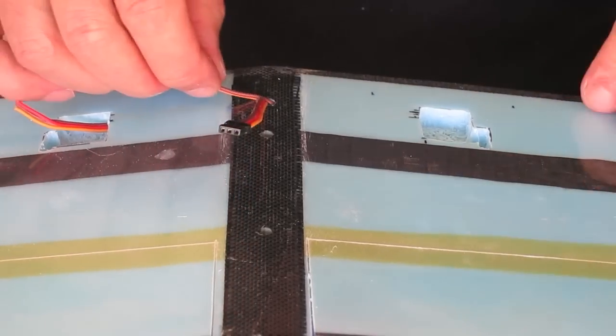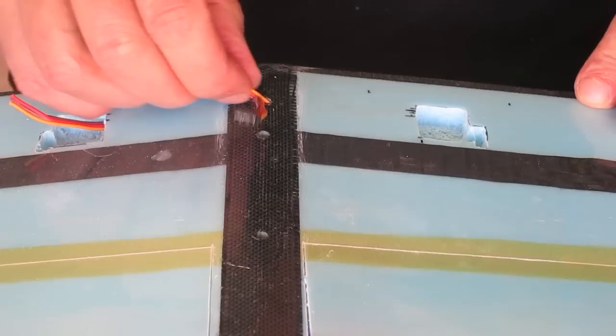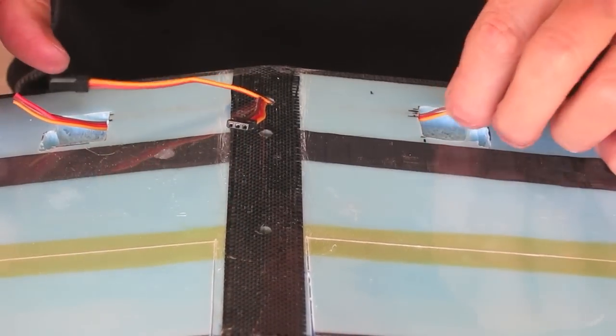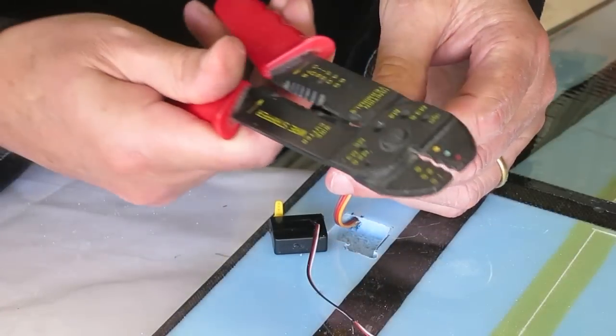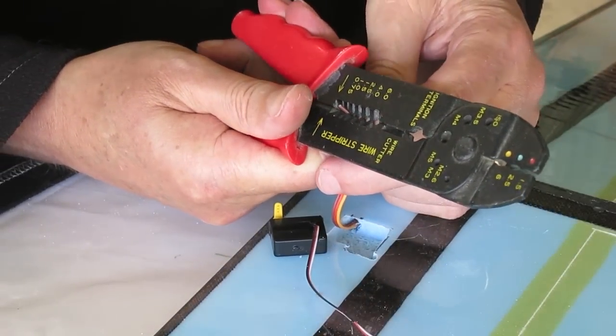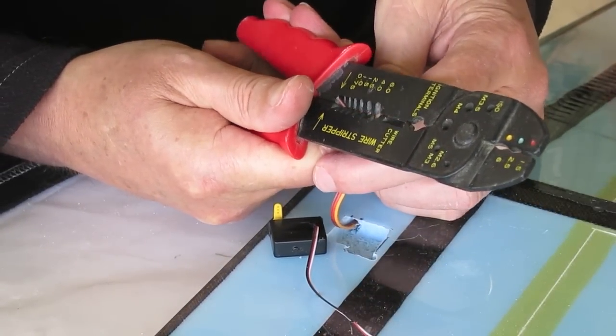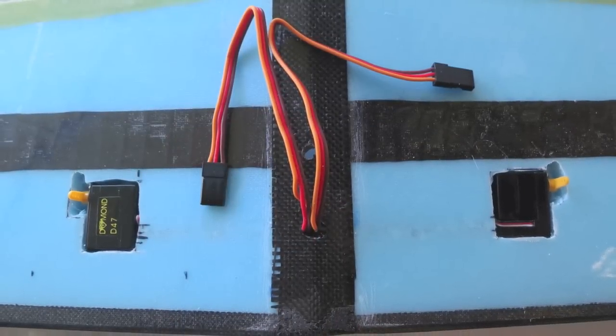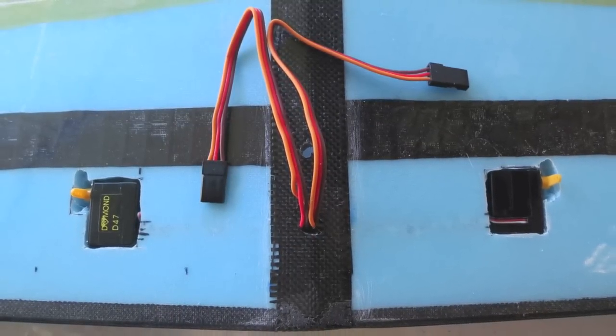Now I'm threading through the servo leads after cutting off one of the ends. I'll solder that onto the servo lead. The kit comes with a 4 pin plug but I didn't want to have to deal with that, so I just extended each servo lead.